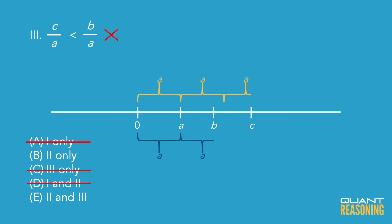That's the exact opposite of what this Roman numeral is suggesting. So we can eliminate answer choice E because it claims that the third Roman numeral is always true, but we just discovered that it's never true. And that leaves us with the correct answer: answer choice B.